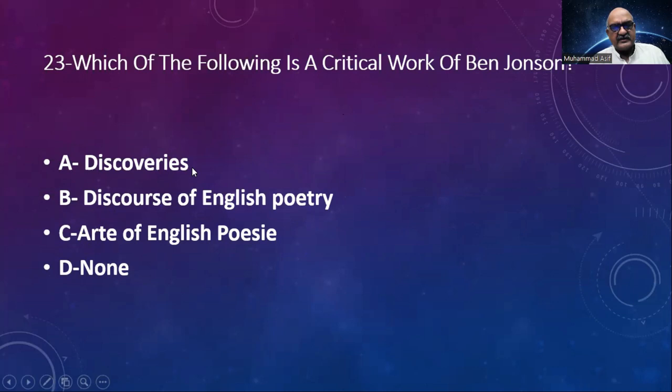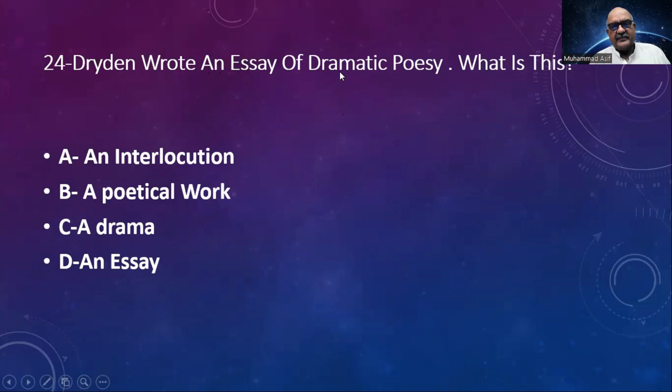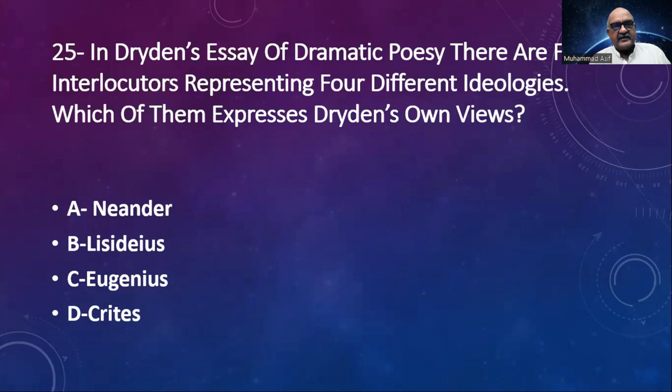Number 24: Dryden wrote An Essay of Dramatic Poesy. What is it? Options: an interlocution, a political work, a drama, an essay. Option A — interlocution — is correct. Number 25: In Dryden's Essay of Dramatic Poesy, there are four interlocutors representing four different ideologies. Which of them expresses Dryden's own views? Options: Neander, Lisideius, Eugenius, Crites. The correct answer is Neander.